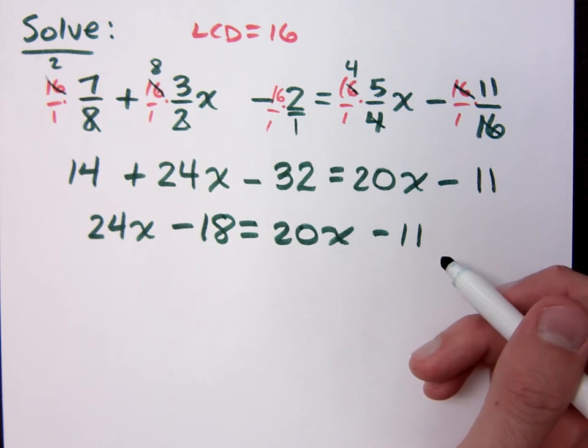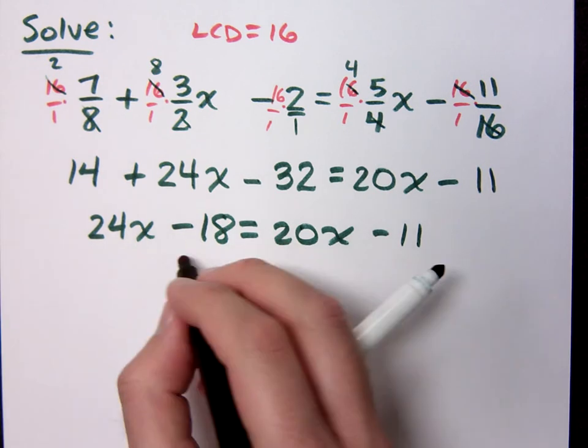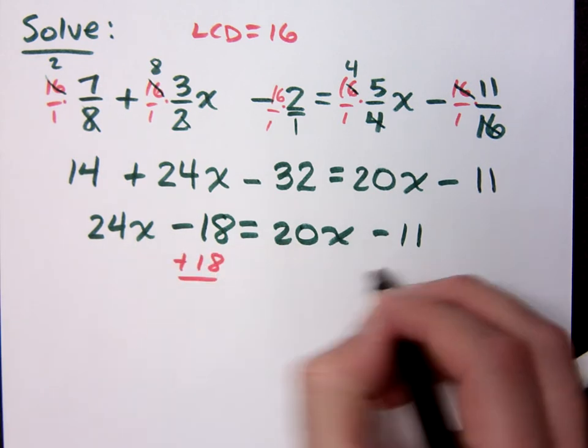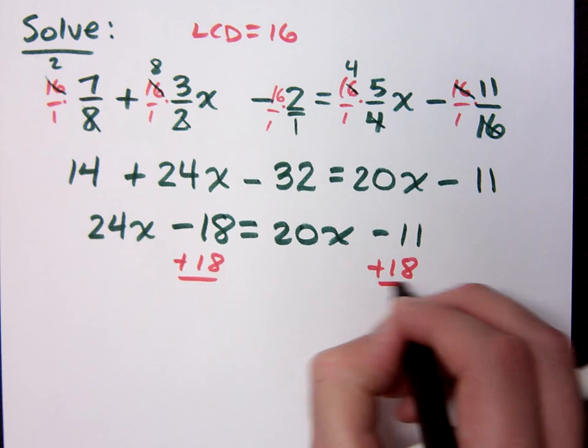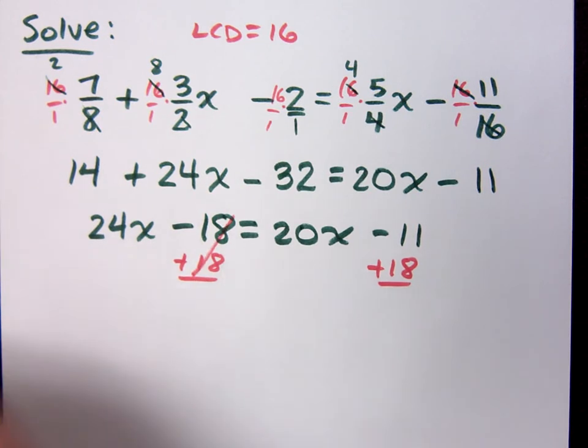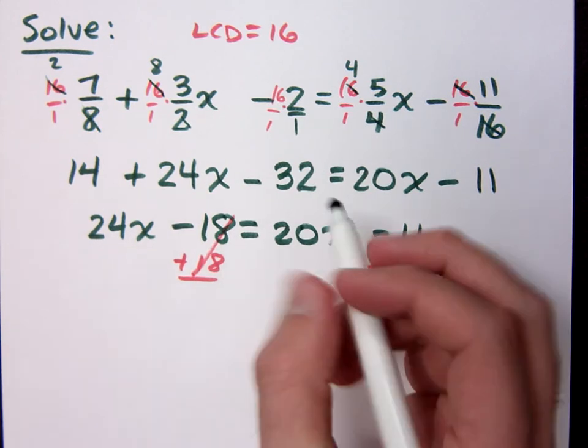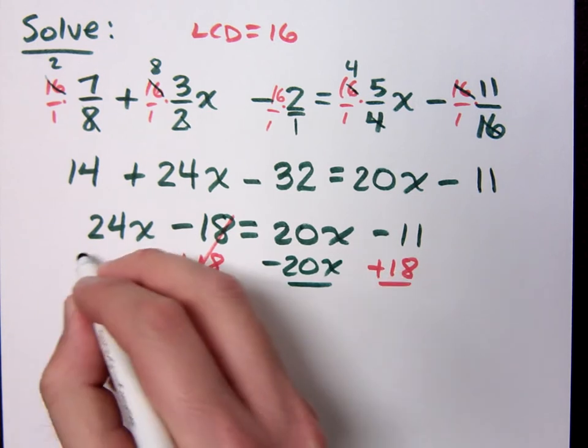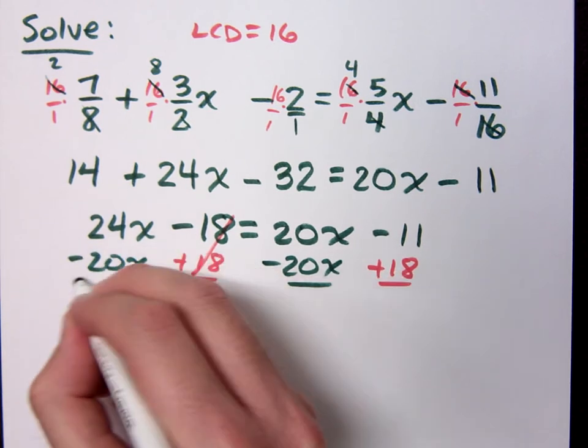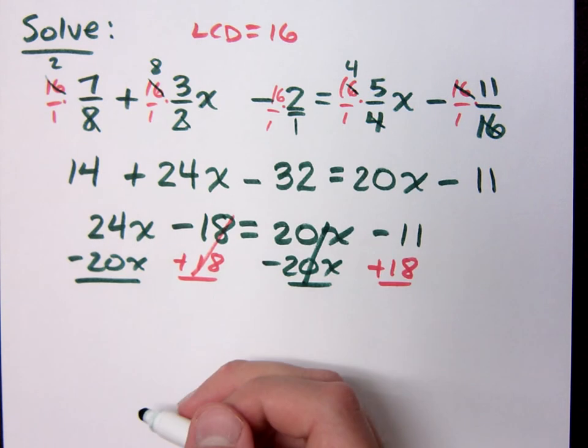Now what do I do? Plus 18. So you want to add the 18 to the right. Now if you do that, that means you're forcing the variables to go where? So subtract 20x. And what do we have now?